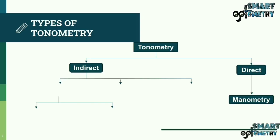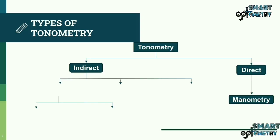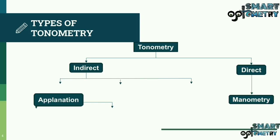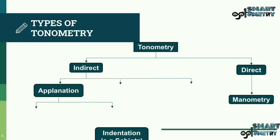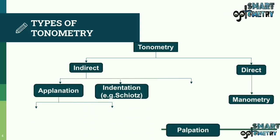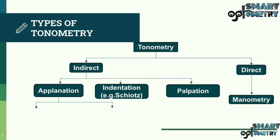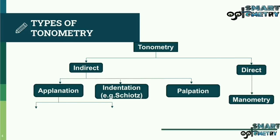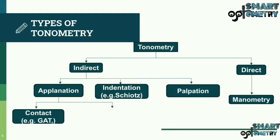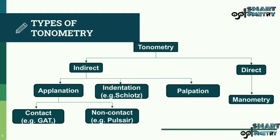Indirect tonometry is further divided into three parts: Applanation, Indentation, and Palpation Tonometry. Applanation Tonometry is further divided into Contact and Non-Contact Tonometry.